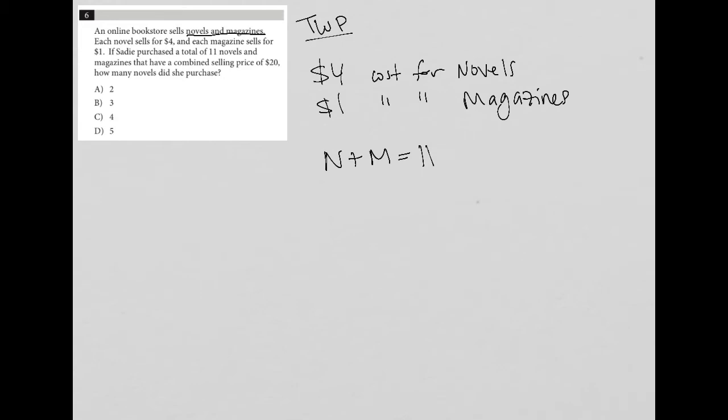They have a combined selling price of $20. Well, each novel was $4, so four times N. This is the number of units, and this is the price. So four times the number of novels plus one times the number of magazines, we should get $20.